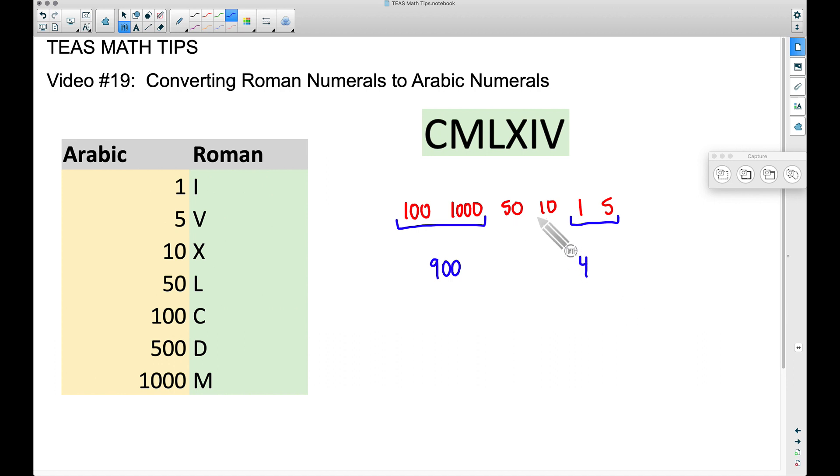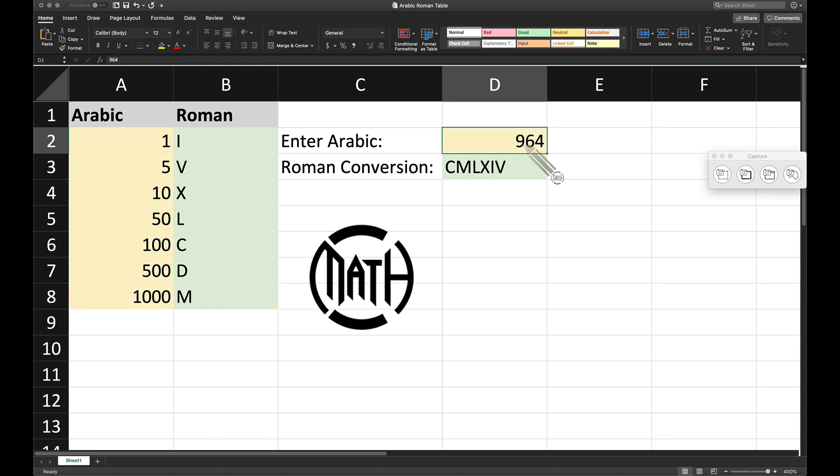We don't have a smaller in front of a bigger here, so we want to add these. We have 50 plus 10 is 60. And now if we add these numbers up, notice we get 964. That matches that right there perfectly.